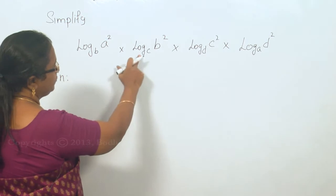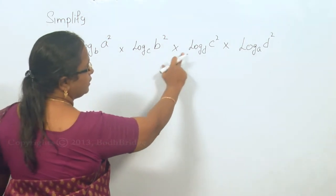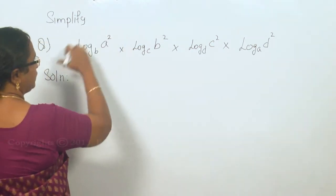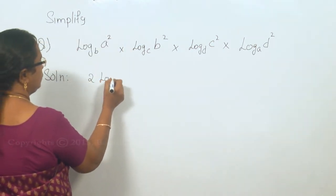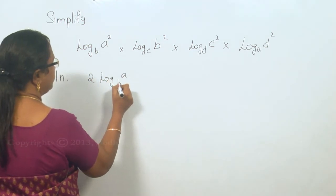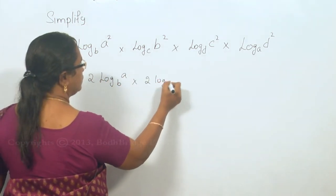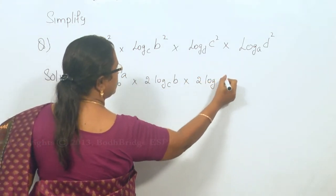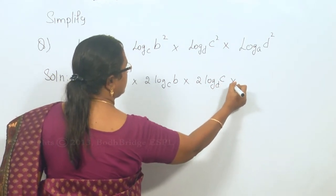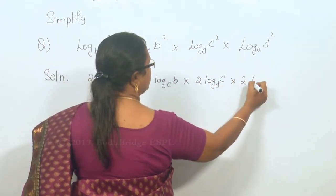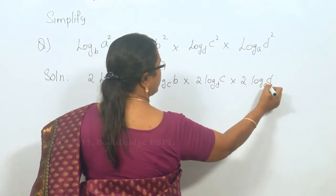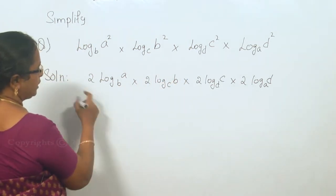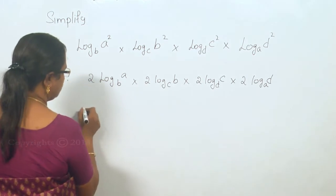We have log a squared to the base b, into log b squared to the base c, into log c squared to the base d, into log d squared to the base a. We can bring the powers outside, so this can be written as 2 log a base b into 2 log b base c into 2 log c base d into 2 log d base a. We have four 2s which can be taken out, so this is 2 into 2 into 2 into 2, that is 2 to the power 4, which is 16.